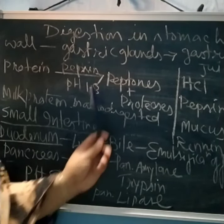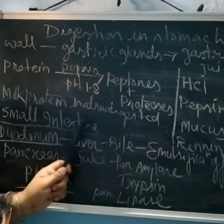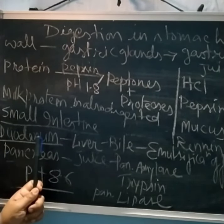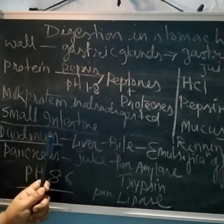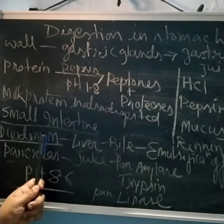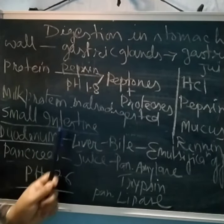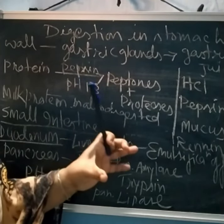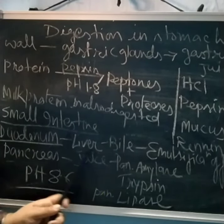Now we come to the next part, which is the small intestine. The small intestine has a part called the duodenum. The duodenum has an alkaline medium, and between the stomach and the duodenum there is a sphincter muscle that regulates the passage of food.